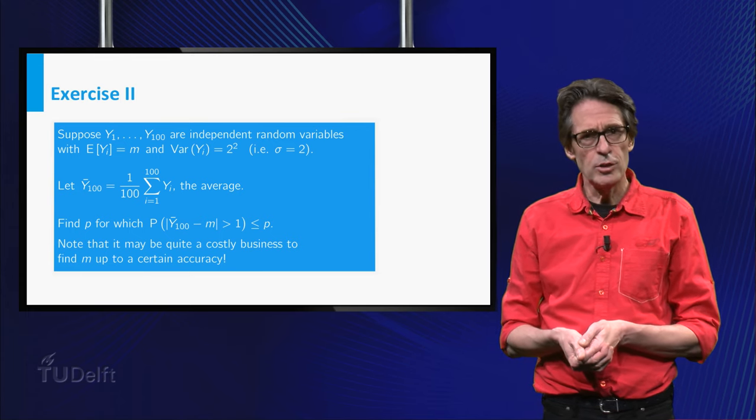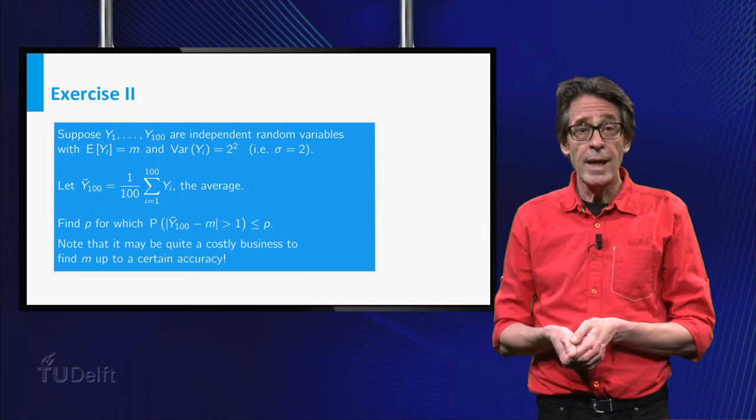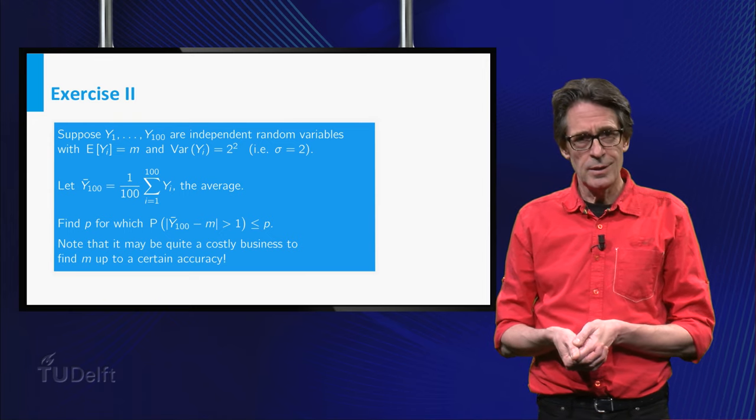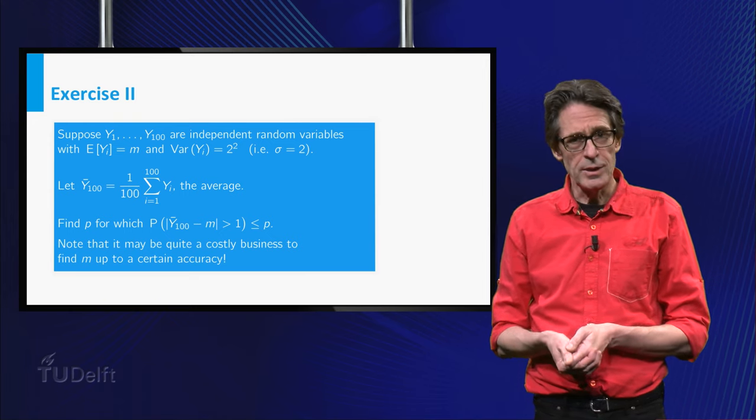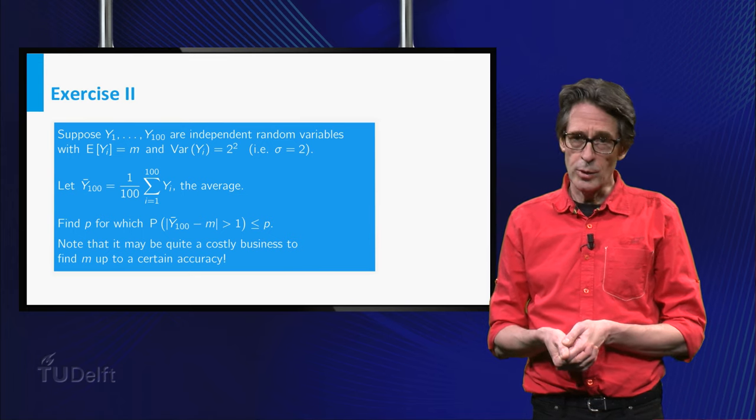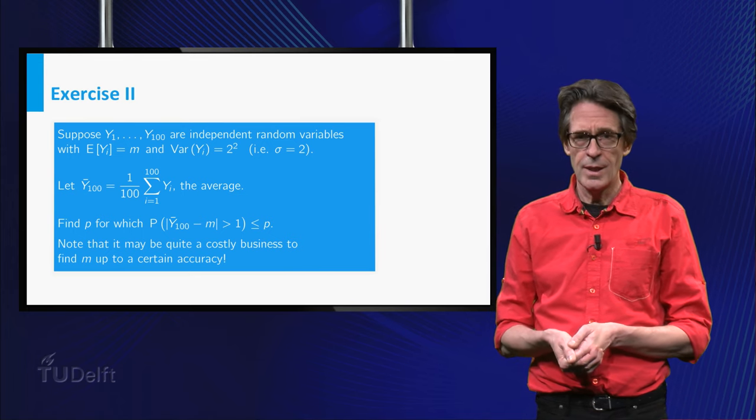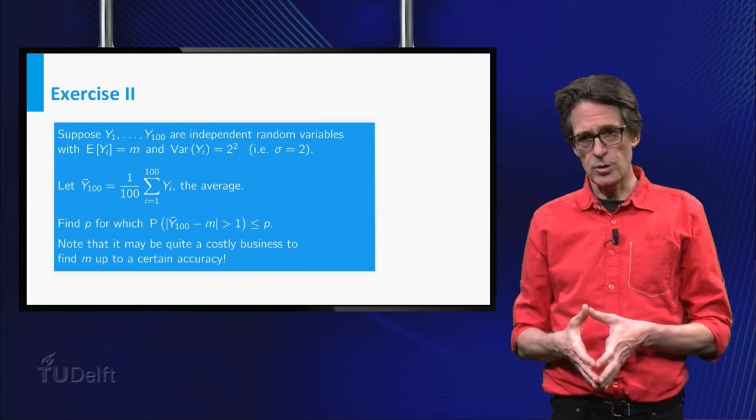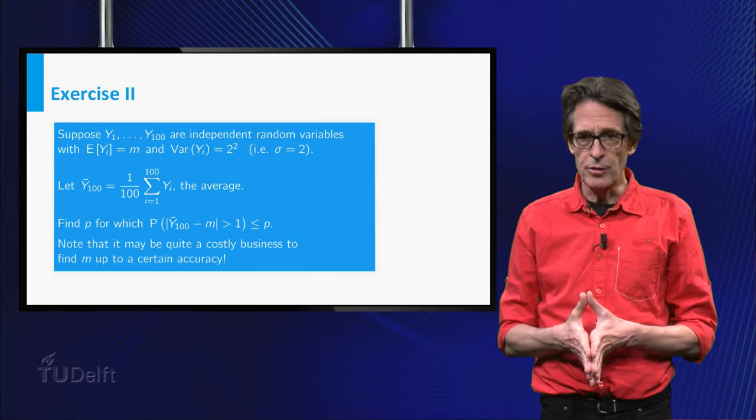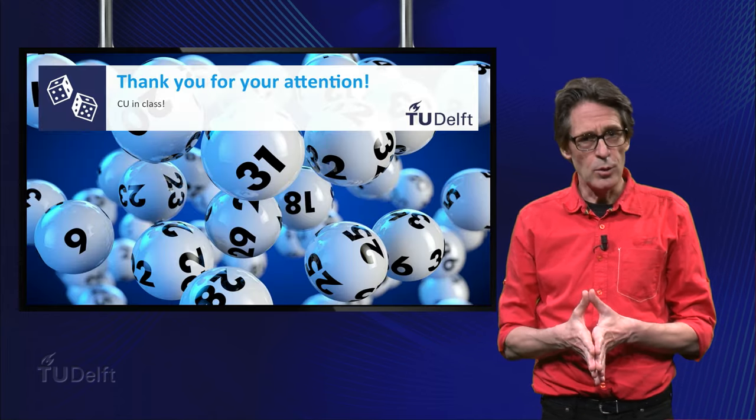If y is the average of 100 measurements, and you use Chebyshev's inequality, what is at most the probability that y is off by more than 1 degree? Take your answers to the next class, where we will test you with feedback fruits. Thank you for your attention.